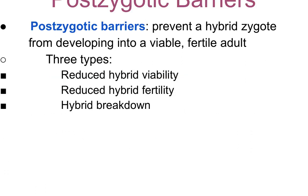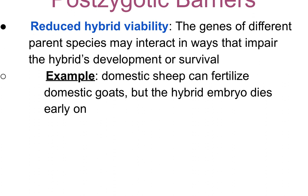Now the postzygotic barriers. A postzygotic barrier prevents a hybrid zygote from developing into a viable, fertile offspring. This can happen three ways: reduced hybrid viability, reduced hybrid fertility, or hybrid breakdown. Hybrid viability is reduced because the genes of different parent species may interact in ways that impair the hybrid's development or survival. For example, a domesticated sheep can fertilize a domesticated goat, but the hybrid embryo usually dies early and doesn't survive.